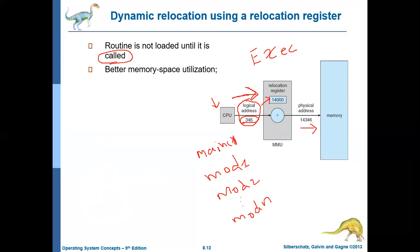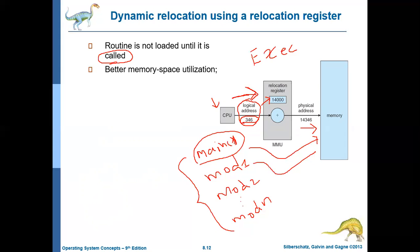The question is: will all modules be loaded into memory at the same time? No — that would waste memory. What happens instead is that only the main module will be first loaded. At some point the main module may call module one; once module one is called, then it will be loaded. Only when module one is being called will its logical address be converted to physical address, and then it will be loaded to the appropriate location.